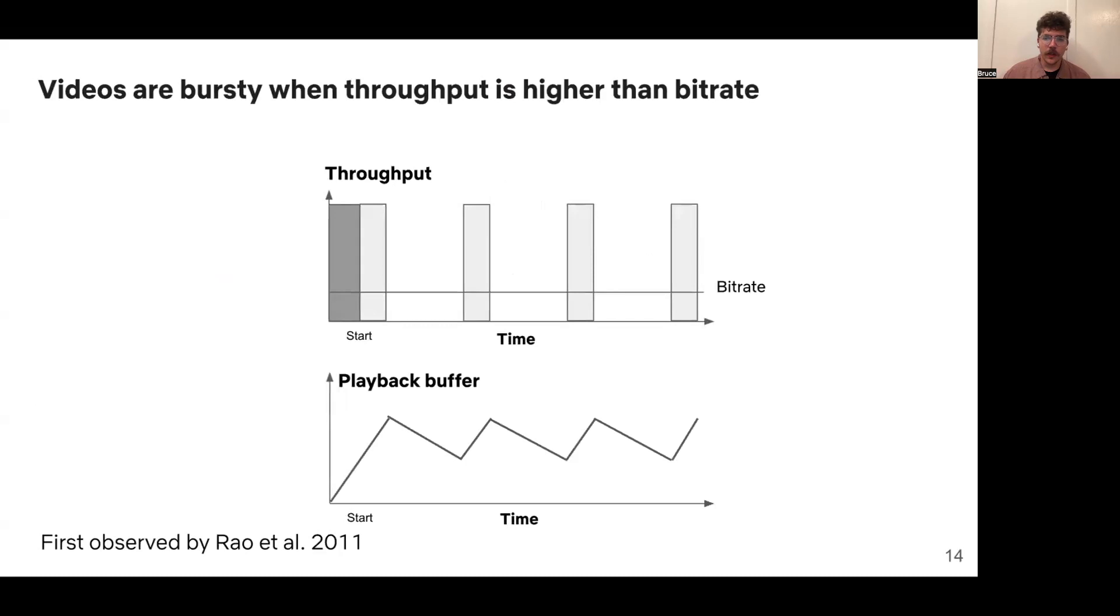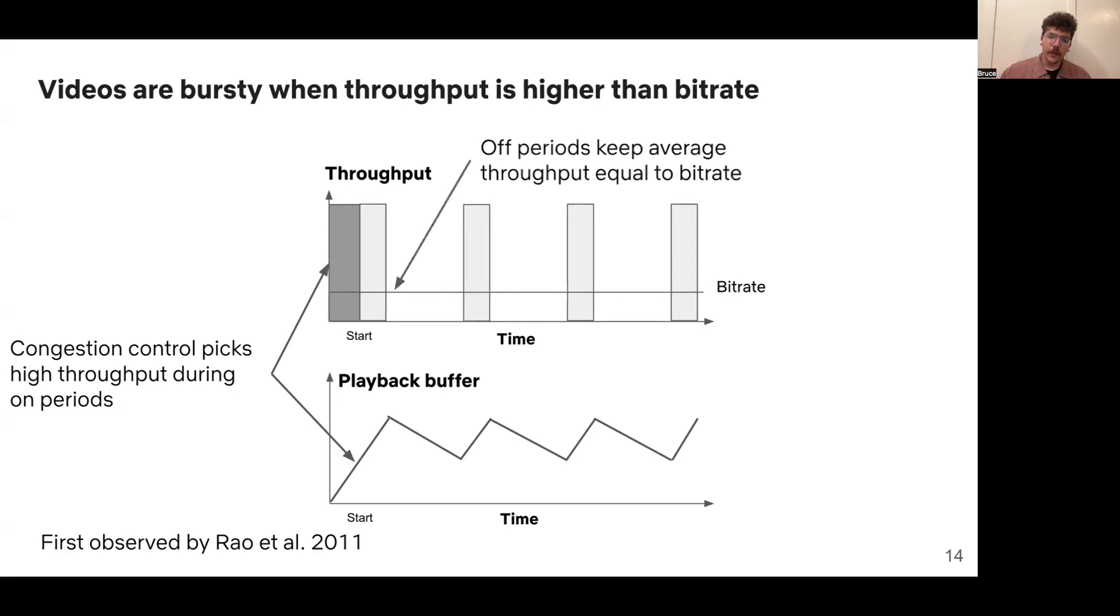When we zoom into what a video looks like, all of this extra throughput means that videos are very bursty and have what's known as on-off behavior. This is because video is actually limited at two different timescales. On the short-term timescale, video is limited by congestion control algorithms, which are trying to send as fast as possible during these on periods. But over the entire duration of the video, the average long-term throughput must, by definition, be equal to the video bitrate. Because of this, we need something to bring down the average throughput, and so we have these off periods, where we don't send anything at all, and the average throughput is reduced down to the bitrate, despite these short, bursty on periods.